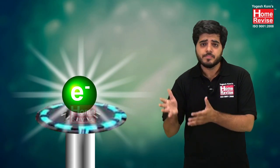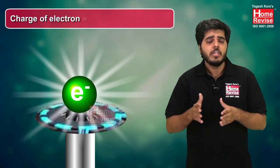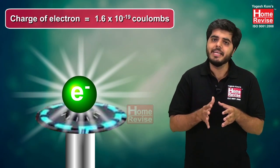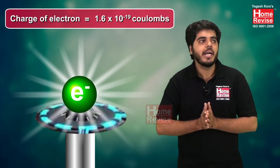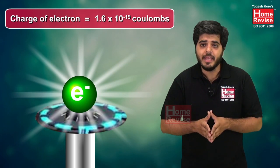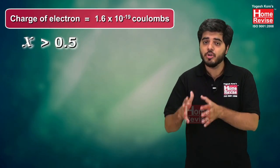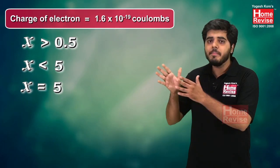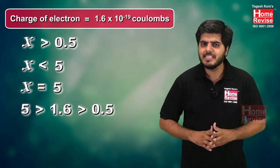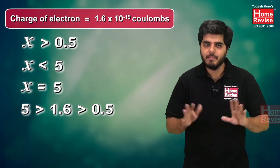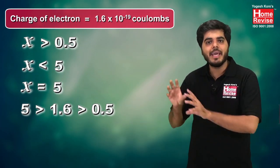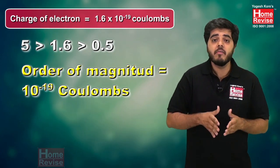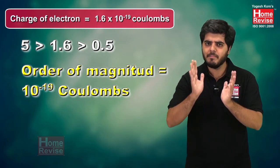Let us take another example. The charge of an electron is 1.6 × 10⁻¹⁹ Coulomb. First, check the range: x = 1.6 is greater than 0.5 and less than 5, so it is already in range. No adjustment needed. Therefore, the order of magnitude is directly 10⁻¹⁹ Coulomb.